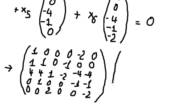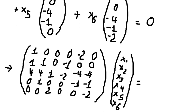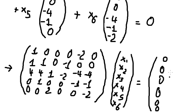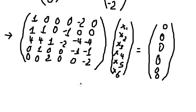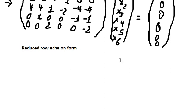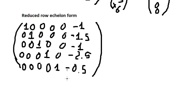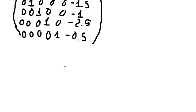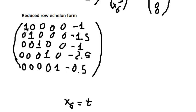This matrix is for S1, S2, S3, S4, S5, and S6, and it equals zero. Then we can use reduced row echelon form. I will use the calculator to do this, and here is the result.